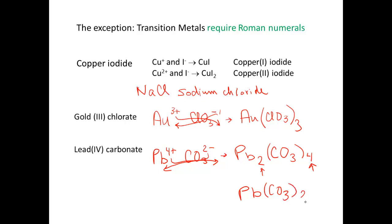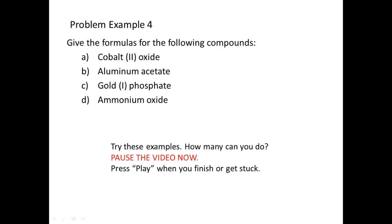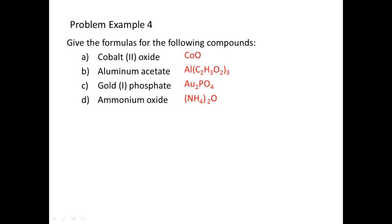Let's do problem example four. Notice that not all of these have Roman numerals. I'm starting to mix them up with the basic naming rules that we learned in the last video. So, if there is no Roman numeral, that means you either have a normal metal that only has one charge, or you might have a polyatomic ion. So, I want you to start seeing a lot of these examples mixed up with each other. Why don't you give these a try and press pause, and I'll give you the answer when you press play.